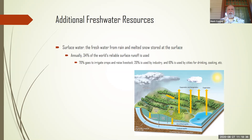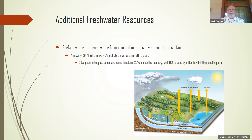Surface water comes from rain and melted snow, which we rely on here in California. Annually, about 34% of the world's reliable surface runoff is used, though it varies with rainfall. Of that, 70% goes to raising crops, 20% to industry, and only 10% is used by cities for drinking, cooking, and household needs.